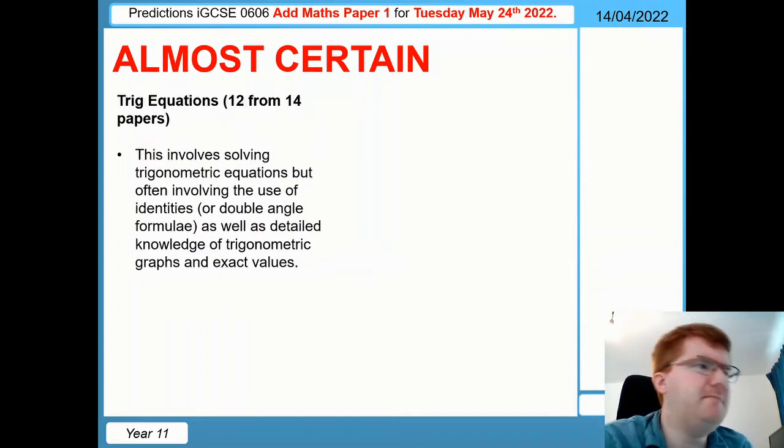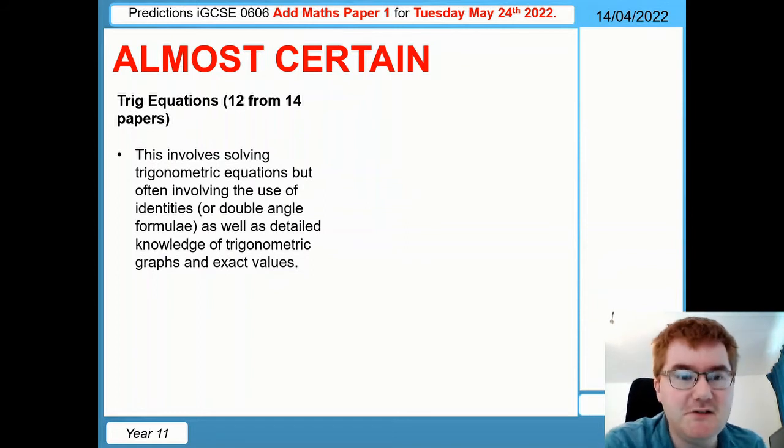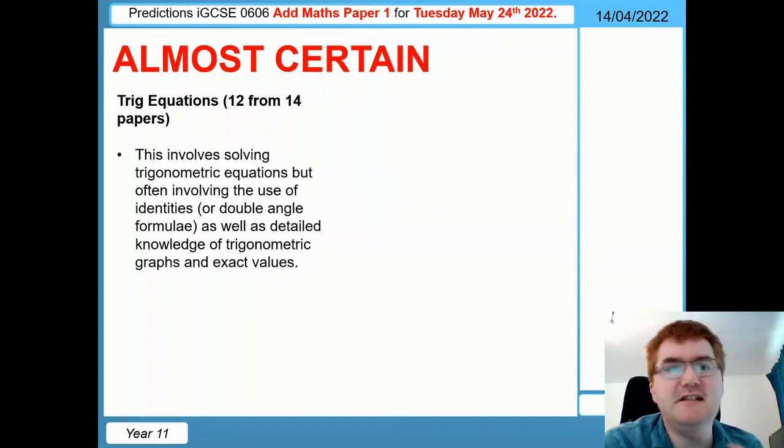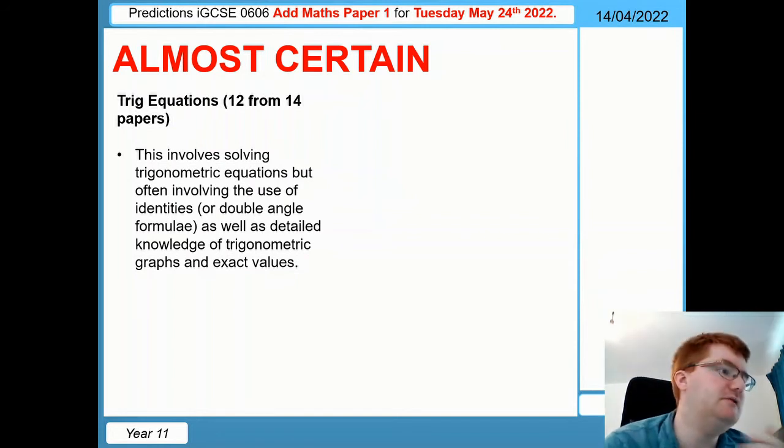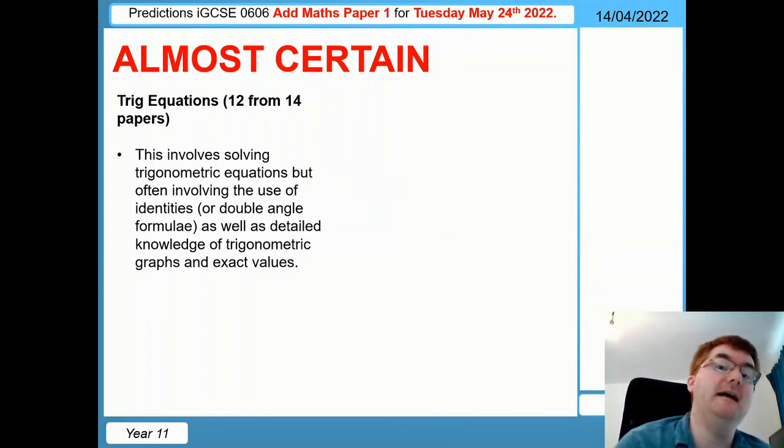On to the very big four topics we're coming up to. The first one is trig equations. This is probably not a surprise if you've done the AdMaths course. It's solving trigonometric equations, but often they integrate use of identities which you need to be aware of, or even the double angle formula as well. You need to know how the graphs look and function and work. I will talk about that right at the end as well. The exact values, and then tying that all together to actually find the solutions to a trig equation within a given domain.